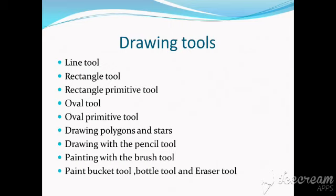Then I can simply draw the polygon and the stars. We can use the pencil tool to draw different objects on the stage. Then we are having the brush tool. The brush tool is having different styles and options. We can see page number 141, which has different brush tool options. We are having paint normal, paint fills, paint behind, paint selection, and paint inside. Figure 9.16 would be very helpful when you are going to work on your assignment.